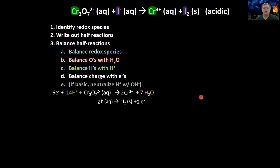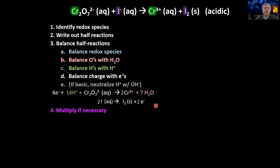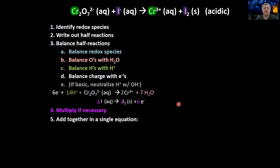We multiply the bottom reaction by three to get the matching electron count, then add the top and bottom reactions into a single combined reaction. Now we need to cancel out things that appear on both the left and right — the electrons cancel out. Our reaction simplifies accordingly. It looks really messy and complicated, so you need to get these steps down.